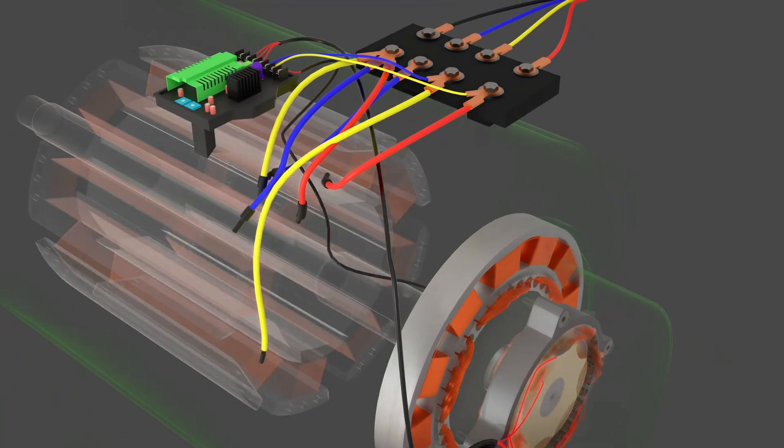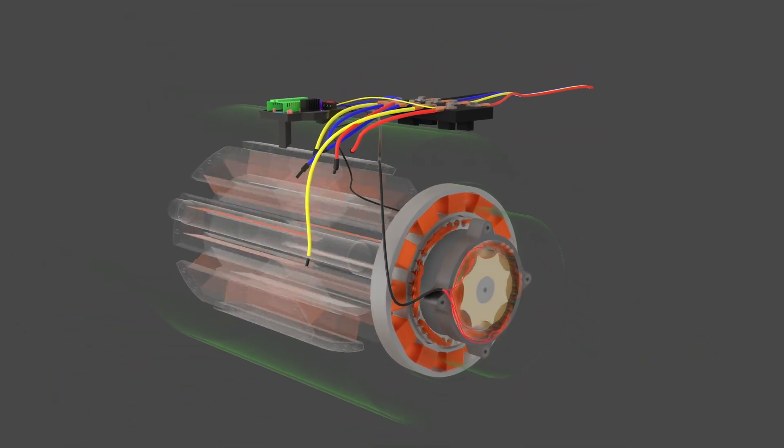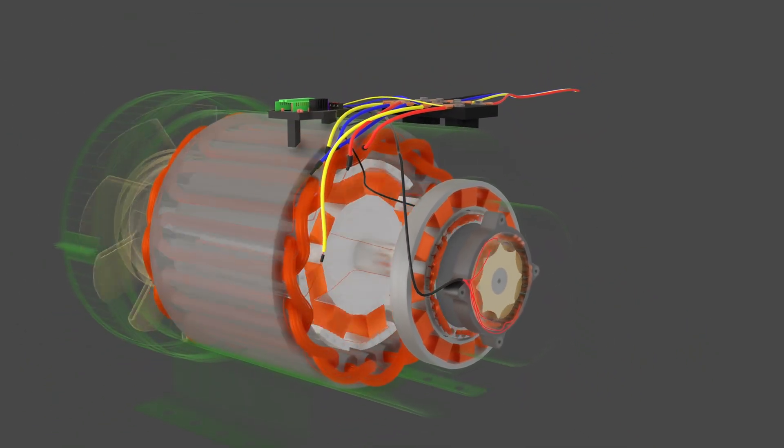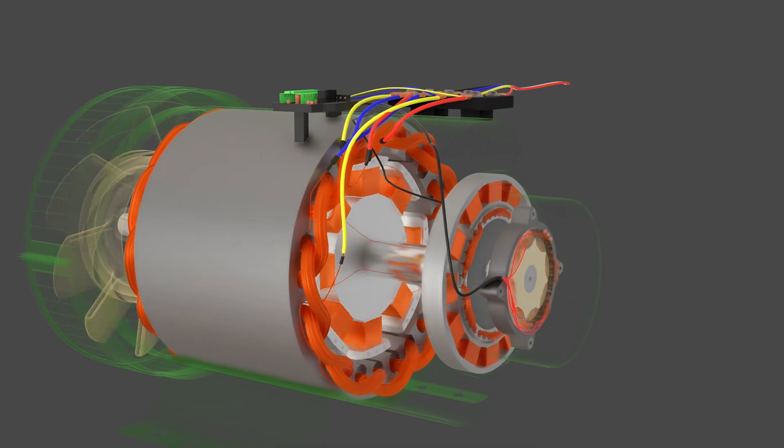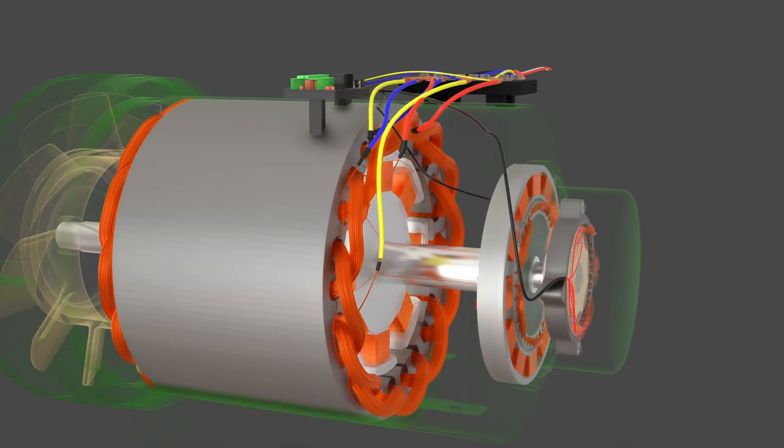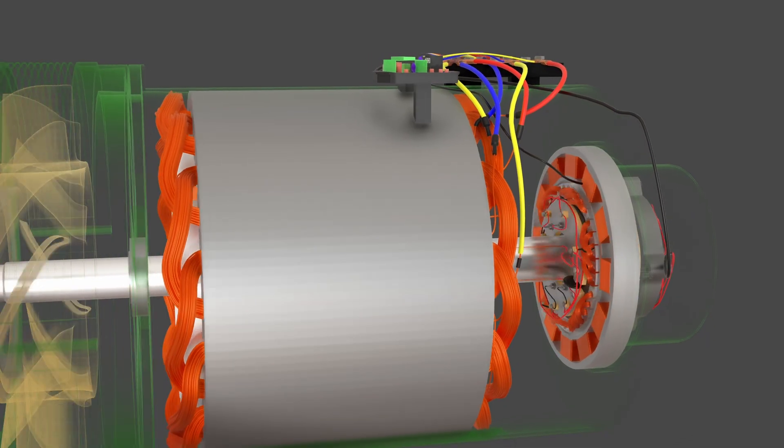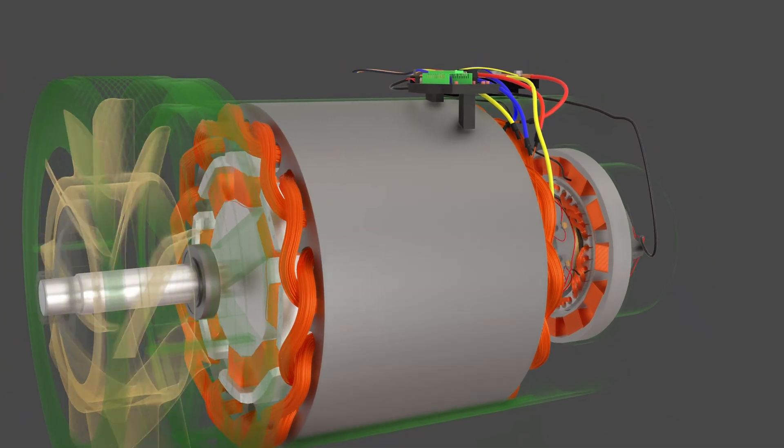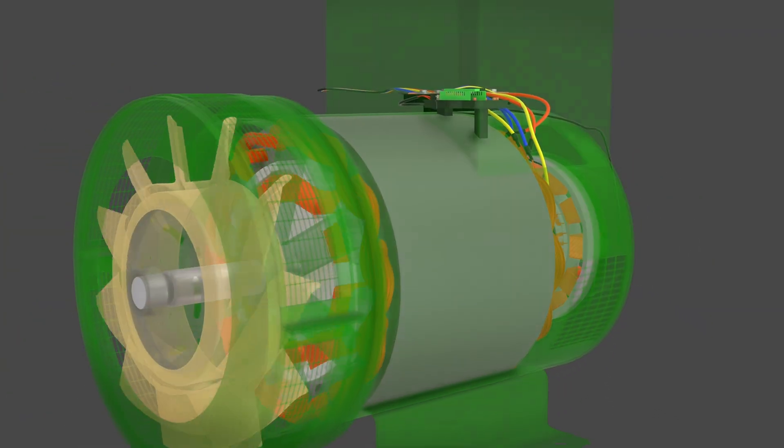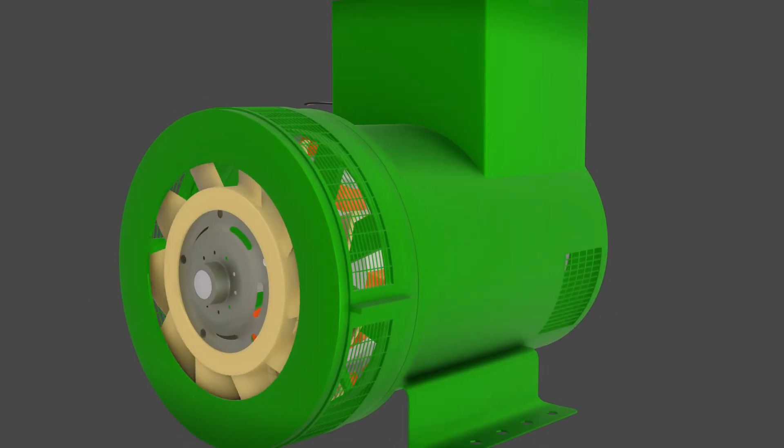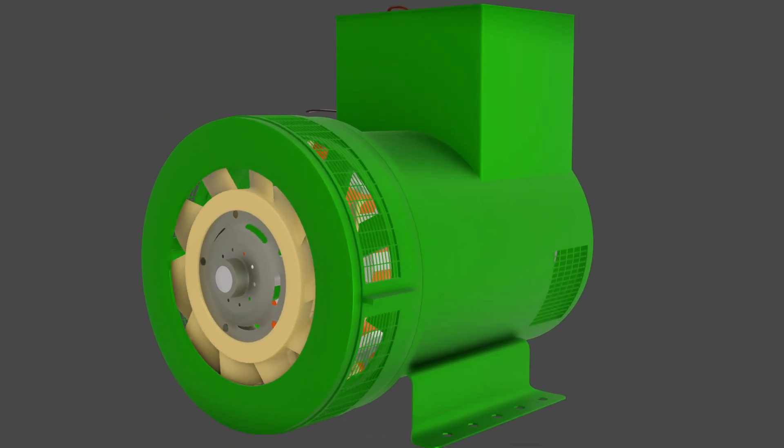The brushless excitation system with PMG provides several advantages: constant power supply to the AVR regardless of load conditions, no residual magnetism dependency for startup, faster voltage recovery during load transients, and elimination of carbon brushes for maintenance-free operation. If you found this video helpful, give it a like and don't forget to subscribe.